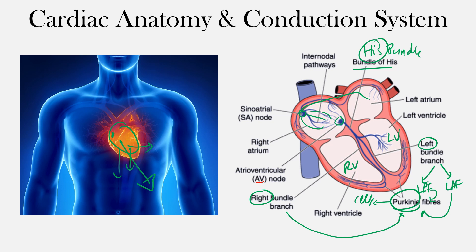Think of this conduction system as the highway system of the heart — the fastest route for an impulse to travel. Any conduction outside of it tends to be slow. For example, ventricular tachycardia originates outside this system, resulting in slow cell-to-cell depolarization, and we can see that on the EKG.